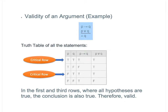A row in which both hypotheses are true at the same time is called a critical row. In this example, the first and third rows are critical rows because both hypotheses are true. The second row is not critical because 'if p then q' is false. The last row is not critical because the disjunction of p and q is false. An argument is invalid if and only if there exists a critical row with a false conclusion. Since both critical rows have true values for q, the argument is valid.